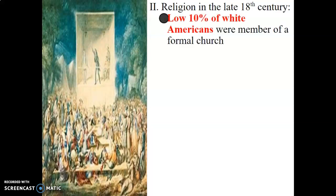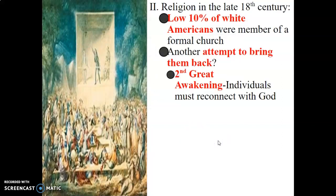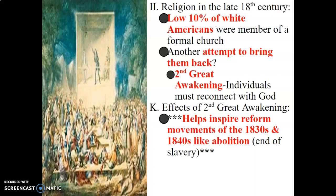Religion in the late 1800s: only about 10% of white Americans were part of an organized religion. That number started to increase with the rise of the Second Great Awakening, where individuals must reconnect with God. The effects of the Second Great Awakening included giant group meetings in parks and public settings — the modern equivalent would be the big churches on TV with preachers reaching large audiences. It helped inspire the reform movement of the 1830s and 1840s, like abolition, the end of slavery.